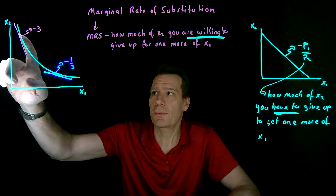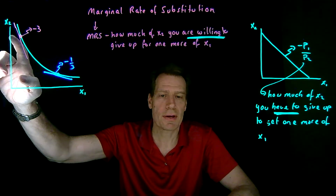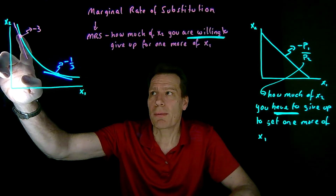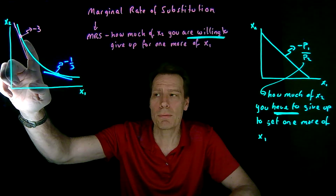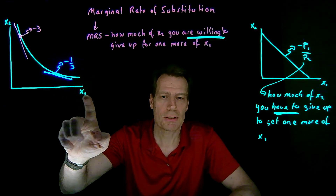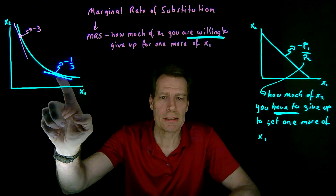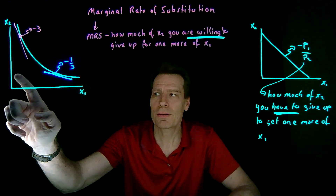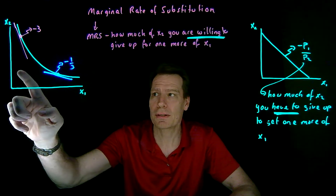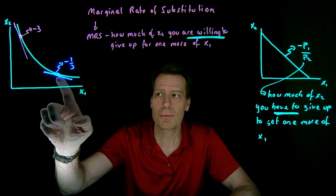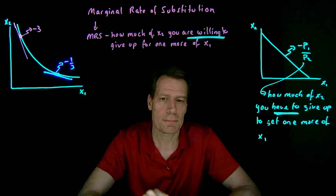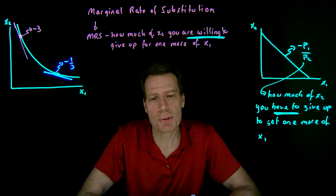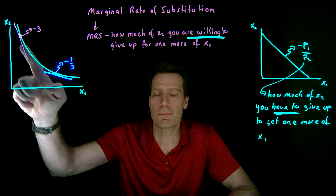I'm not willing to give up as much of x2 to get one more unit of x1 here as I was at the steeper bundle. Why is that? Well, at the steep bundle we have very little x1 and a lot of x2. Because we have a taste for variety, we're willing to give up a lot of what we have a lot of — x2 — to get one more of the thing we don't have very much of, x1. But at the shallower bundle, we don't have very much x2 and we have a lot of x1, so we're not willing to give up much of x2 to get more x1. So our marginal rate of substitution — the rate at which we're willing to substitute x2 for x1 — changes along the indifference curve.